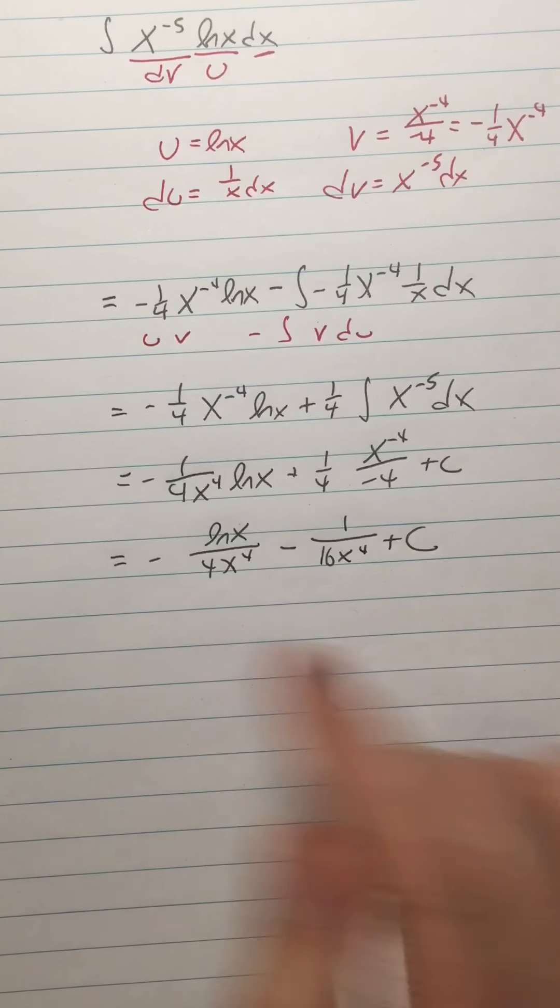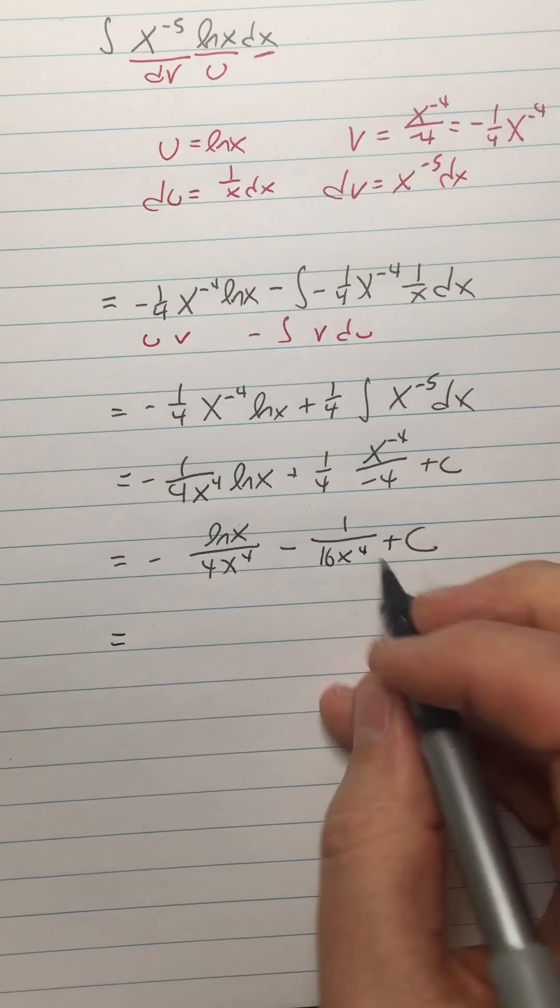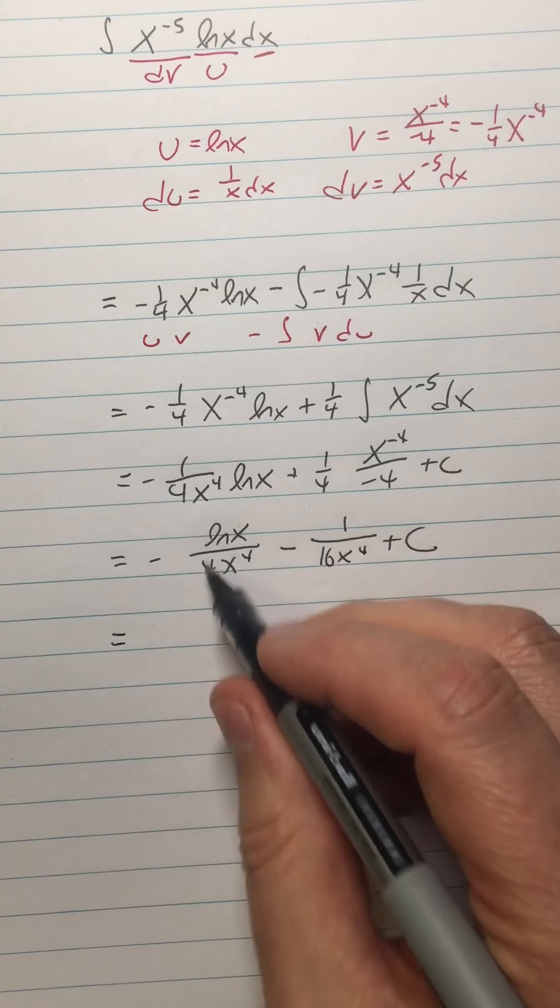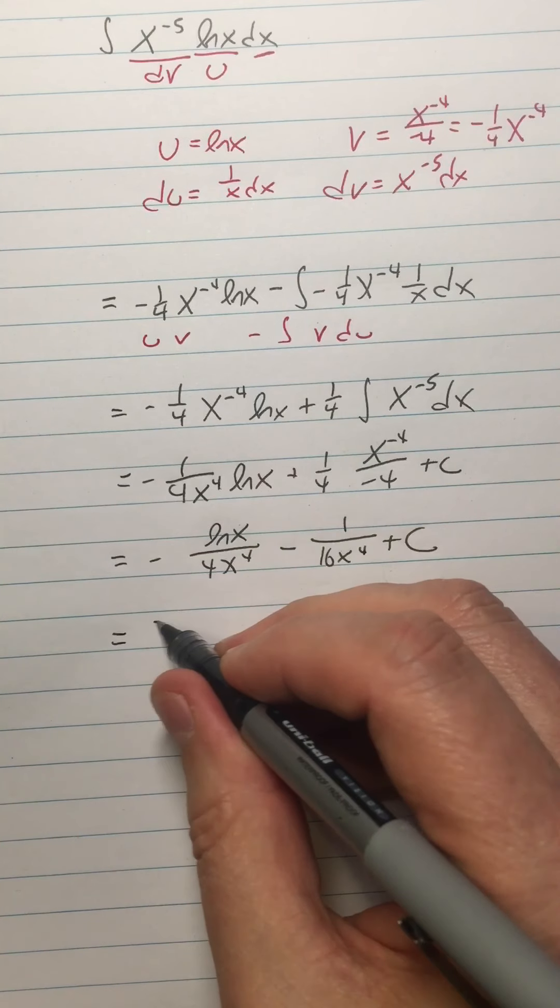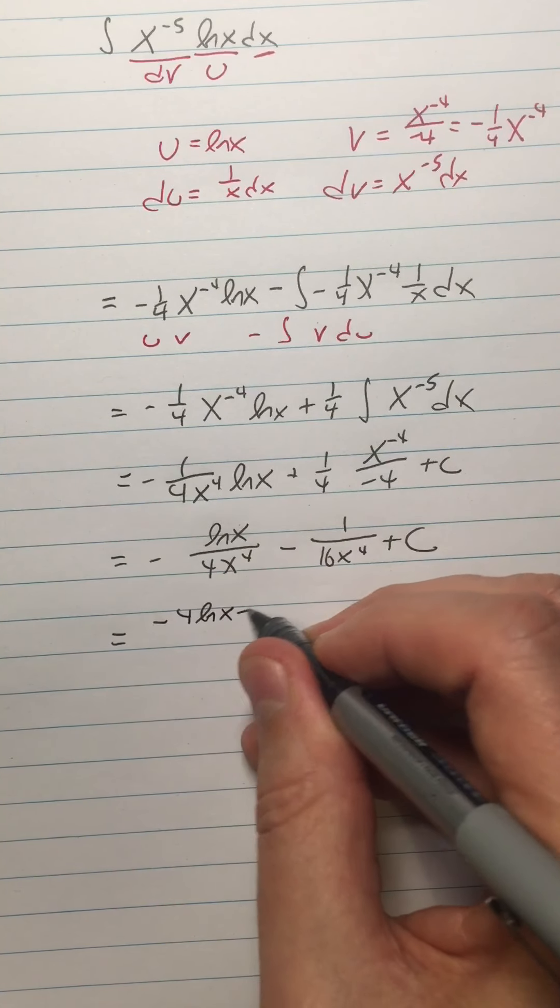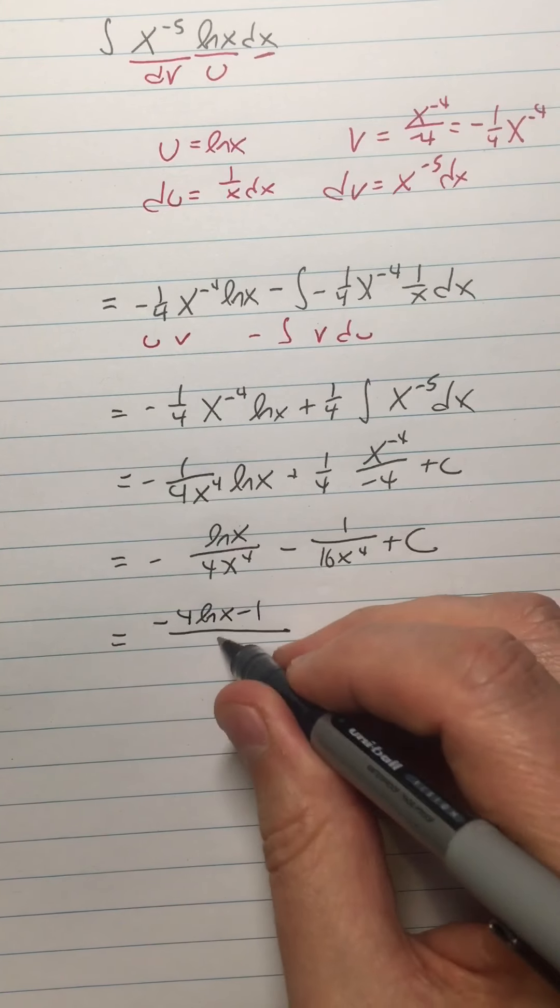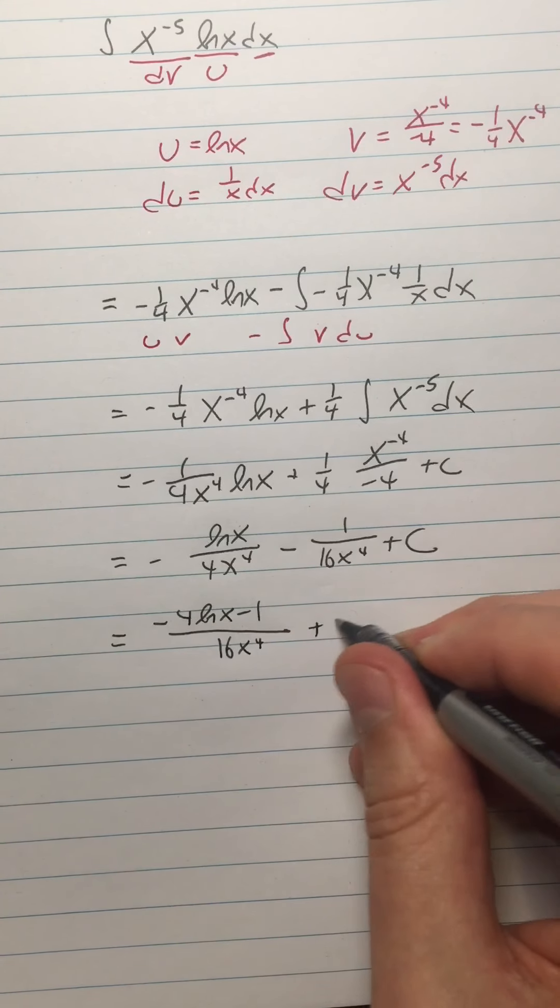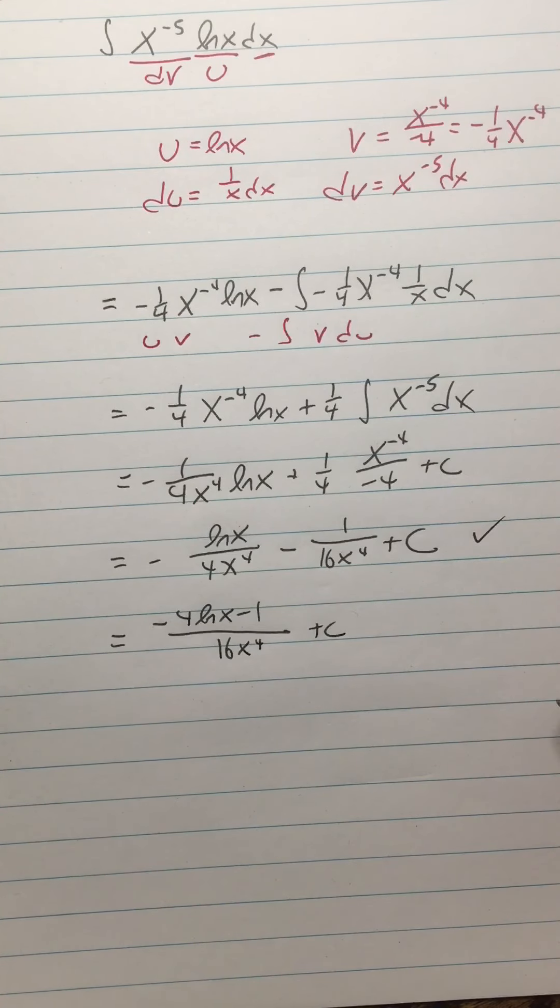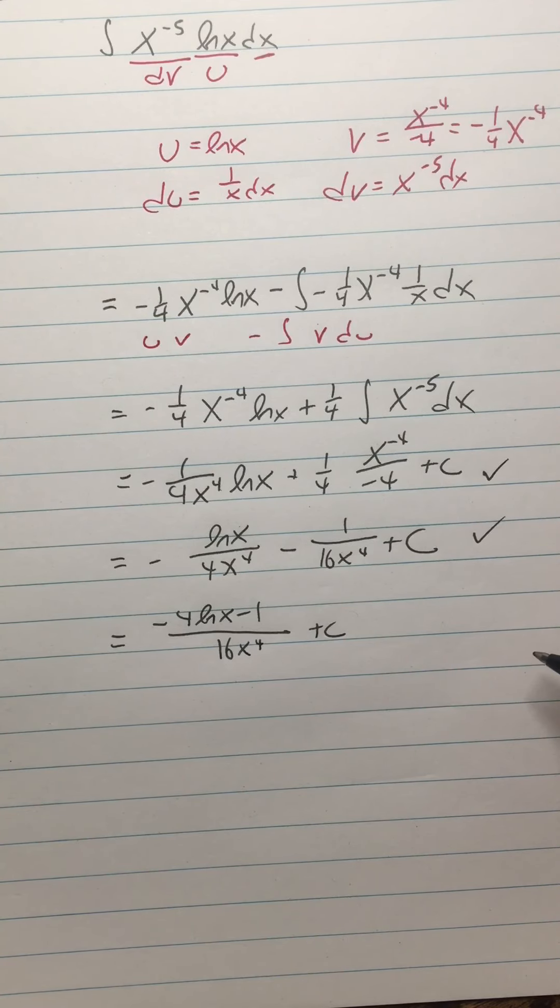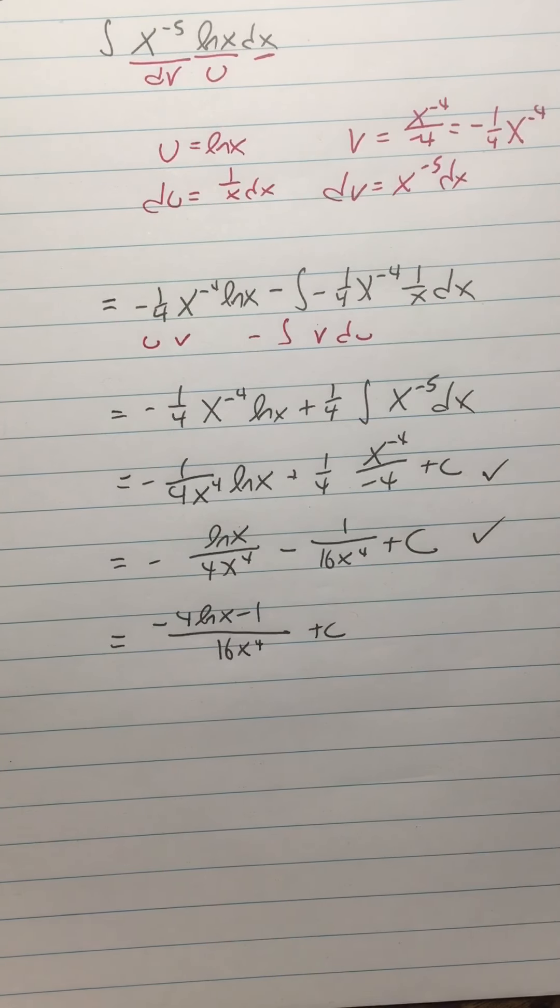If you want to be a little wacky, let's get a common denominator. Why not? So that would be, because I'd have to multiply this one top and bottom by four. So negative four ln x minus one over 16 x to the fourth. That's just fun. You could leave it like that. That's fine. All right. So that is number 22.